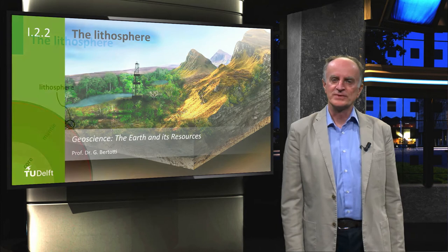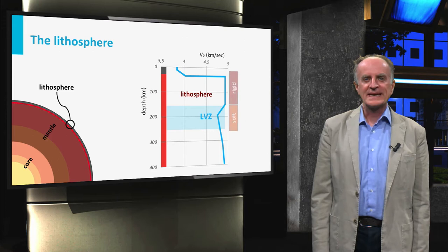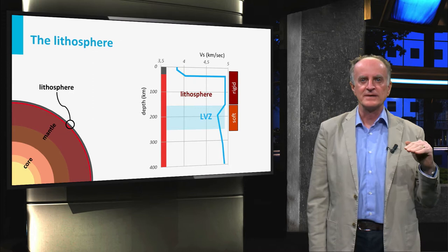Welcome, today we will look at the lithosphere. As you remember, we have defined the lithosphere as the layer overlying the low velocity zone. From a mechanics standpoint, the lithosphere is the rigid unit overlying the softer and more easily deformable asthenosphere.